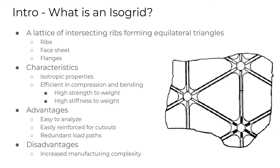So what is an ISO grid? It's a lattice of intersecting ribs forming equilateral triangles. It can consist of just the ribs, it can also have a face sheet but doesn't have to, and it can also have flanges — on the side opposite the face sheet, like an I-beam. The neat characteristic is it has isotropic properties, so even though the material is highly non-isotropic, because of the triangles, you can treat it as a solid piece of material in analysis.